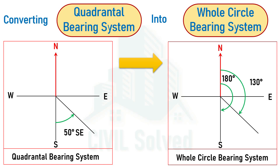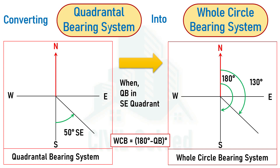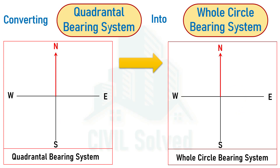which gives 130 degrees — so that is the bearing in WCB system. The generalized formula for conversion when the line lies in the southeast quadrant is: WCB = 180 minus the angle in quadrantal bearing system.